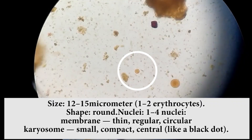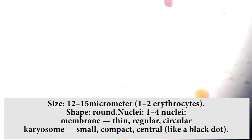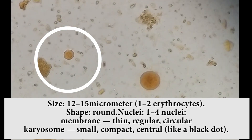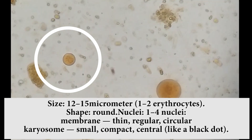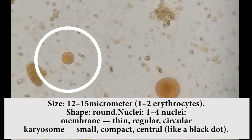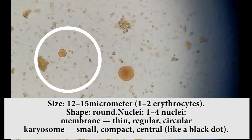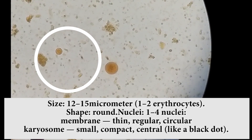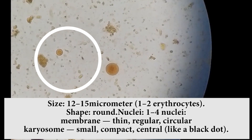Identification of cysts of Entamoeba histolytica: Size 12 to 15 micrometers, equivalent to 1 to 2 erythrocytes. Shape: round. Nuclei: 1 to 4 nuclei. Membrane: thin, regular, and circular. Karyosome: small, compact, central — like a black dot.